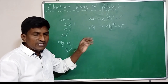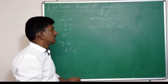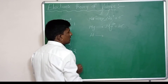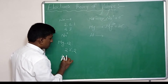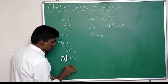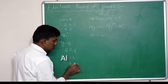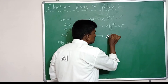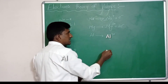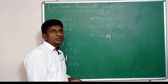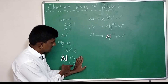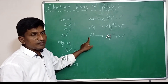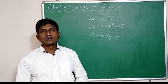Those 2 electrons released by magnesium are gained by another element that needs them, making it stable. Similarly, for the 13th group element aluminum with atomic number 13 — it has 2 electrons in the first orbit, 8 in the second, and 3 in the third orbit. Aluminum loses 3 electrons, becomes a tri-positive ion (a cation), and gets 8 electrons in its inner orbit, gaining stability.